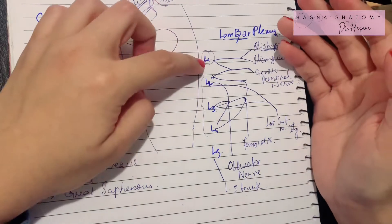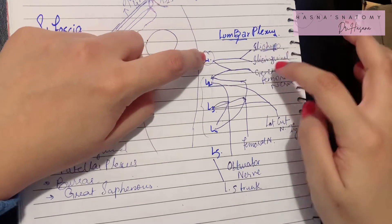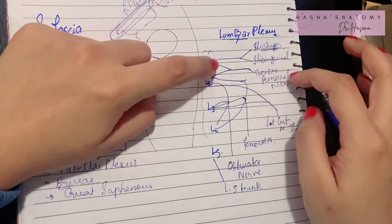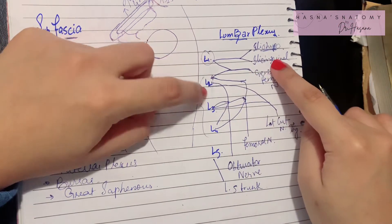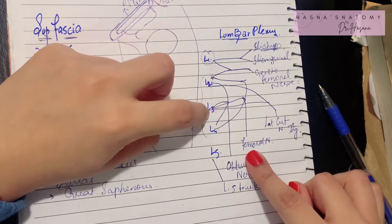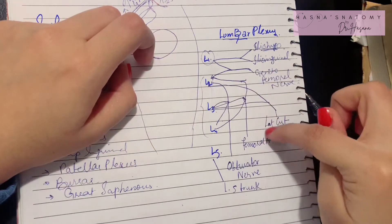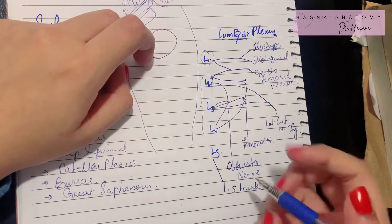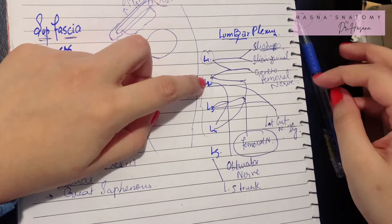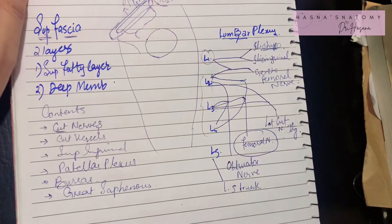To summarize: the anterior primary rami of L1 to L5 form the lumbar plexus. L1 gives the ilioinguinal nerve; L1 and L2 together give the genitofemoral nerve; L2, L3, L4 with their anterior divisions give the obturator nerve; L2, L3, L4 with their posterior divisions give the femoral nerve; and L2 and L3's posterior divisions give the lateral cutaneous nerve of the thigh.